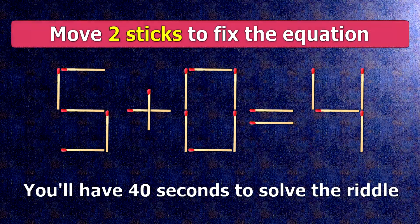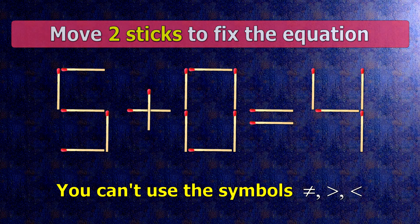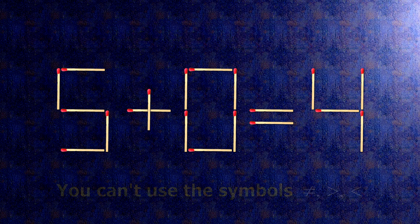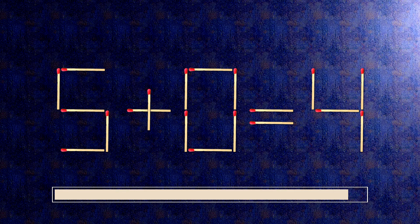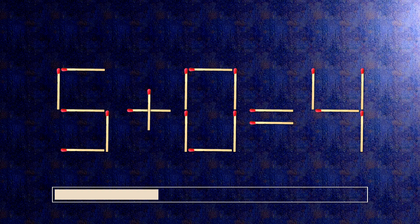We have the equality 5 plus 0 equals 4. Our equality is wrong. We need to move 2 matches to make our equality correct.